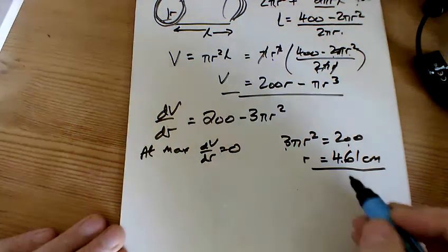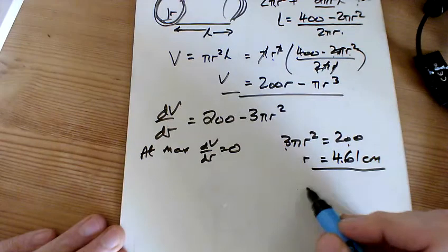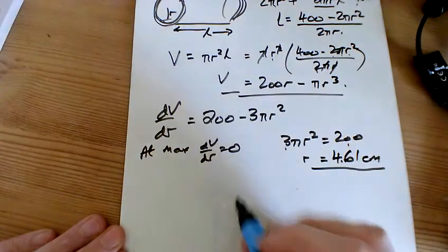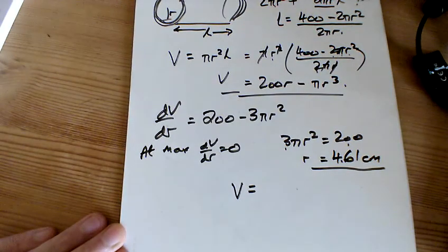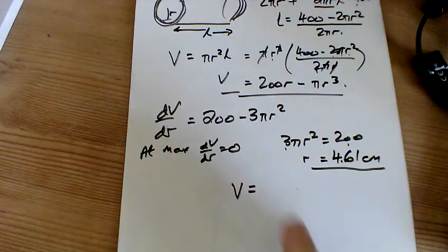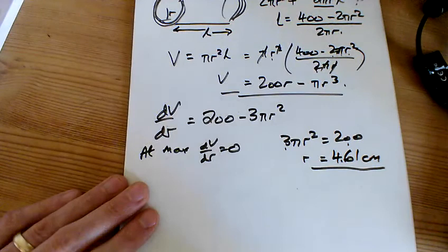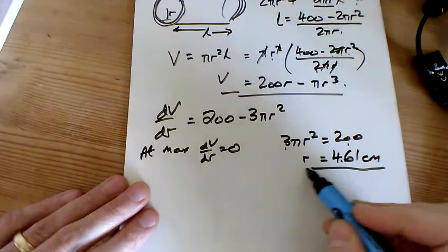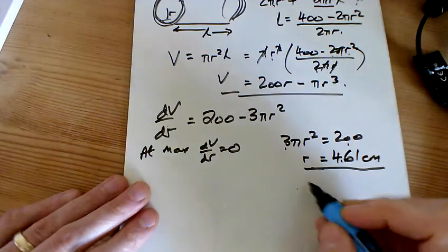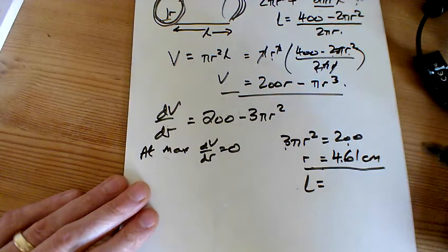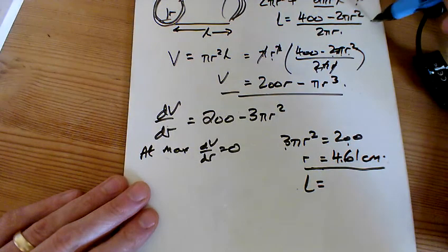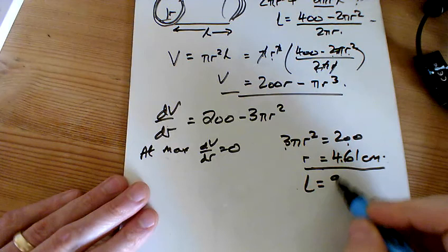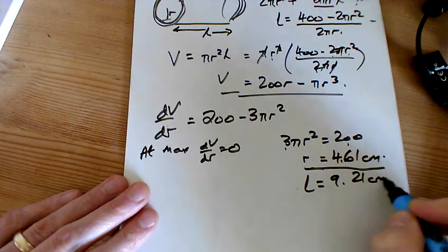Now, if R is equal to that, we're now going to put that back in there. And the maximum volume is going to be... Sorry, no, it doesn't ask us what the maximum volume is, does it? It asks us at the maximum volume, what would the radius be, which we've already got, and what would the length be? So I'm not putting the 4.61 in here. It's actually in that one up there. And that works out to be 9.21 centimeters.